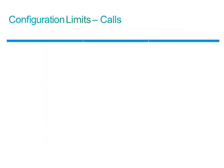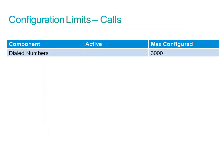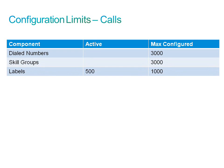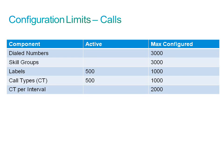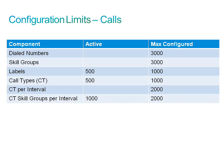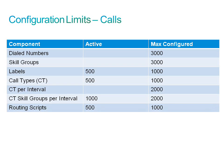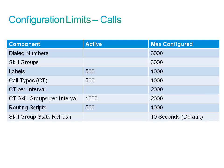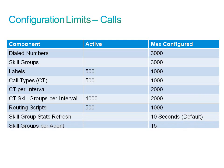For call limits: a maximum of 3,000 dialed numbers, 3,000 skill groups, and 1,000 labels may be configured, but only 500 labels may be active. A maximum of 1,000 call types may be configured, with 500 active. CT per intervals maximum is 2,000. CT skill groups per interval: maximum of 2,000 configured, only 1,000 active. Routing scripts: maximum of 1,000 configured, but only 500 active. Skill group stats refresh defaults to 10 seconds. Skill groups per agent: 15.